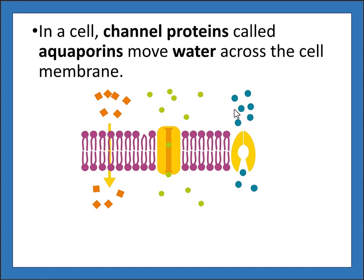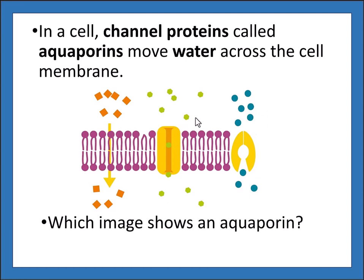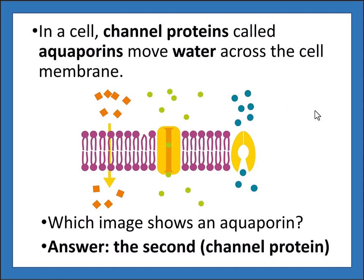In a cell, channel proteins called aquaporins move water across the cell membrane. Water can't travel across the cell membrane by itself — not because it's too large, but because it doesn't want to pass through the hydrophobic area in the middle. It needs to go through a tunnel or channel protein in order to get through there more easily.